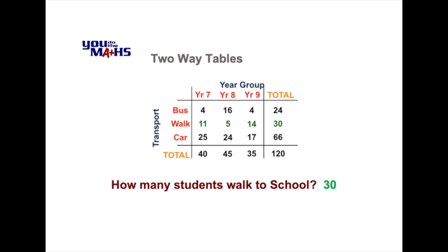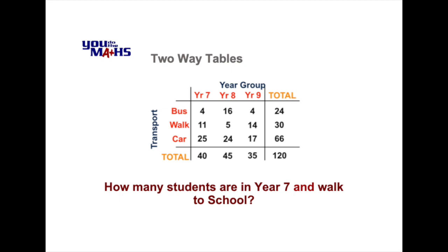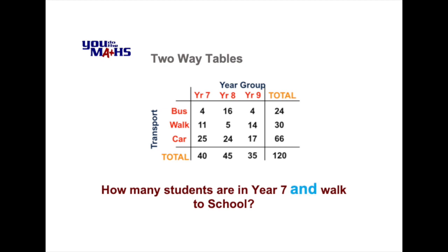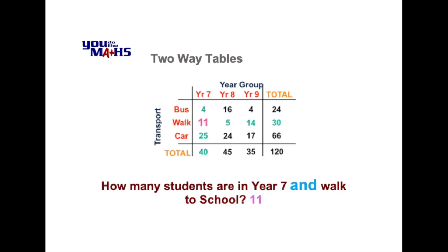Now let's look at some questions that incorporate values within the table. This question asks how many students are in Year 7 and walk to school. The key word is AND — it indicates we are looking for students that fit both categories: they must be in Year 7 and also walk to school. Scanning down the Year 7 column and across the walk row, we can see that there are 11 students that fit both of those categories.